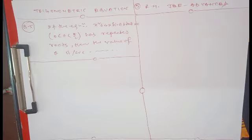From sin 2θ = 1/2, we get 2θ = π/6 or 5π/6, so θ = π/12 or 5π/12. Now π/12 = 15° and 5π/12 = 75°. Both values lie within the given range, so the number of values of θ is 2, corresponding to θ = π/12 and θ = 5π/12.